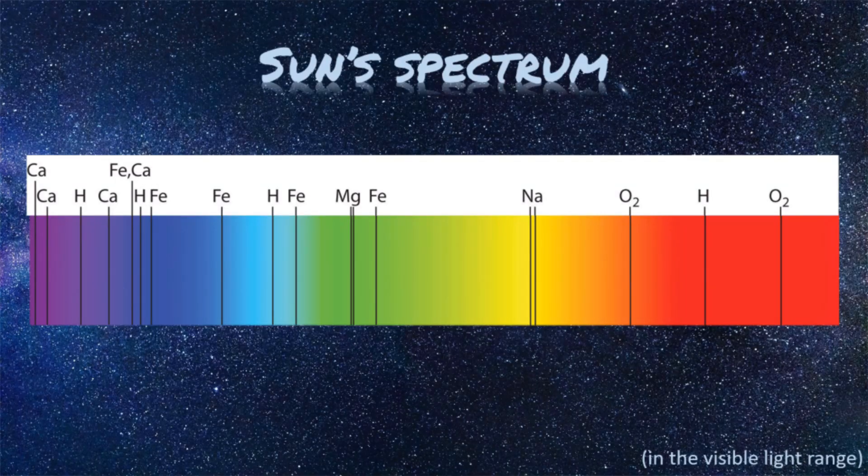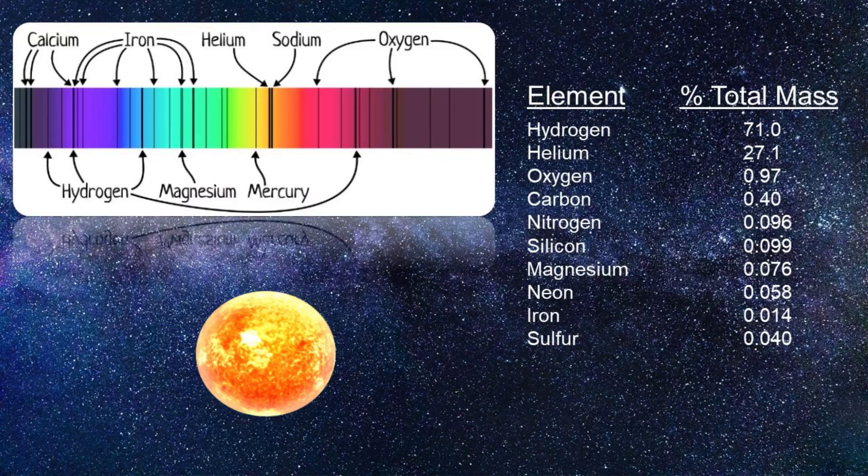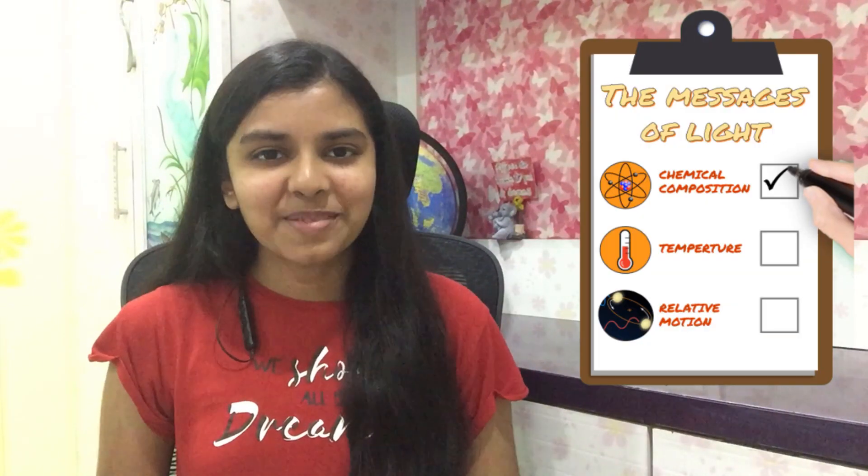Our sun's atmosphere produces an absorption spectrum. And we can read it like a barcode to know exactly what atoms it's made of. We can do this for any star. And voila, we know what stars are made of.